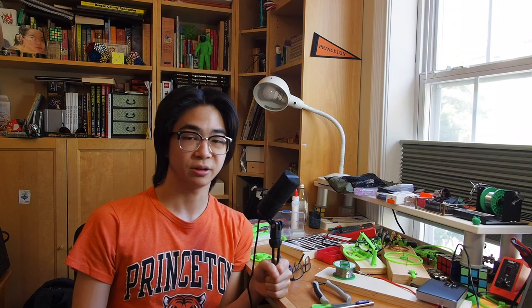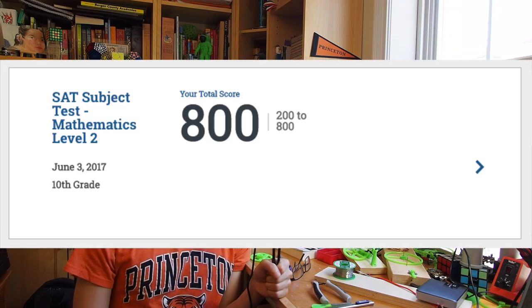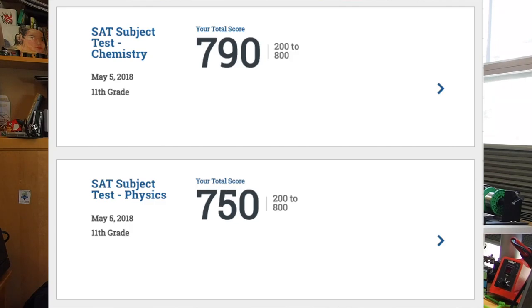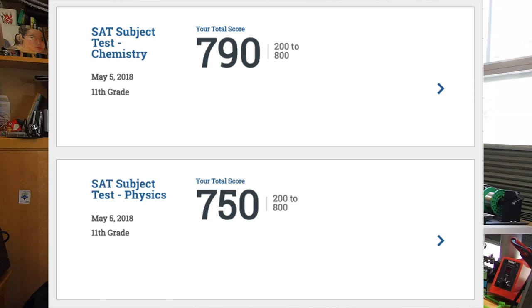As far as subject tests go, as I mentioned before, I knew I wanted to go to a tech school or at least major in engineering, so I took Math 2 at the end of my sophomore year and got an 800. During my junior year, I knew I had to take two more subject tests. In May, I took physics and chem—got a 750 on physics and 790 on chem. In June, I took them again and got an 800 on physics and 790 on chem.